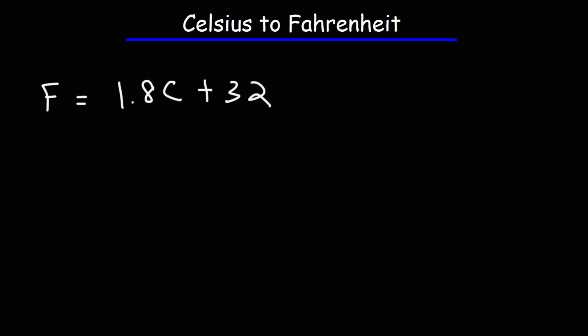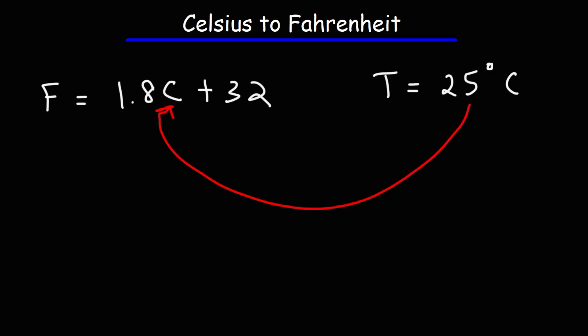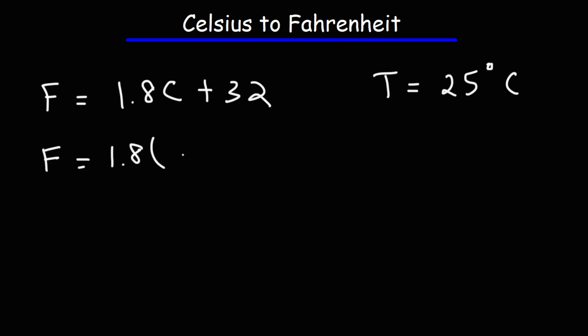So let's say if the current temperature is 25 degrees Celsius, what is the Fahrenheit temperature? Feel free to work on this problem if you want — you can pause the video and try it yourself. All we need to do is plug in this value into the equation. So the Fahrenheit temperature is going to be 1.8 multiplied by the Celsius temperature, which is 25 degrees, plus 32.